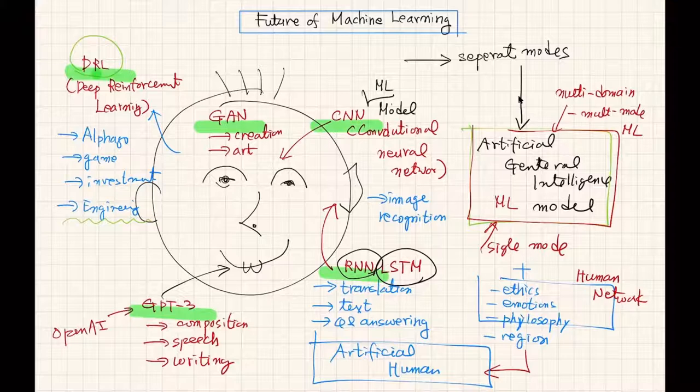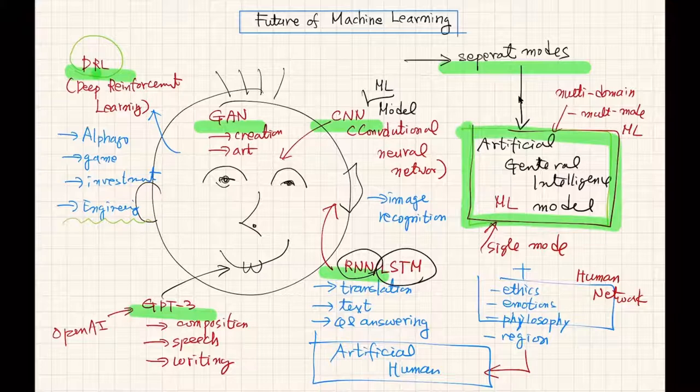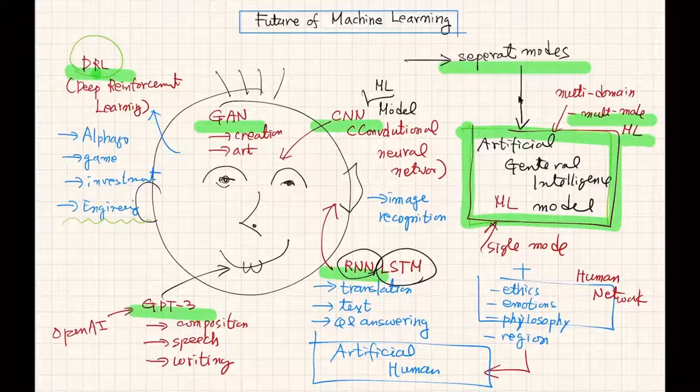Different groups are developing different models. But in the near future, like 10 years later, I expect we're going to have an artificial general intelligence machine learning model. It will be multi-modal machine learning, and this single model will contain all these functions. We'll need a lot of effort from machine learning scientists and engineers, especially strong computing power.